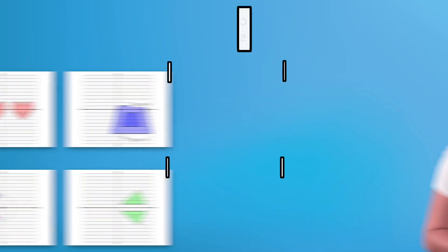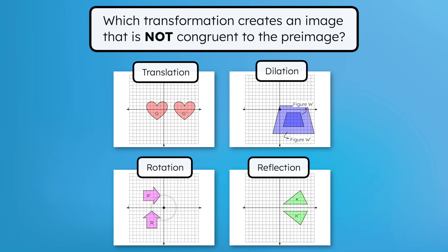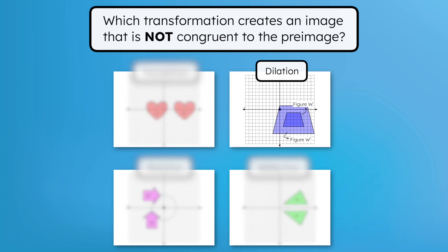Wow, learning the four transformations was pretty fun. I must admit though, one of them feels a bit different than the other three transformations. Let's look at them side by side. Which transformation creates an image that is not congruent to the pre-image? An image created by dilation is not congruent to the pre-image. It's the same shape, but not the same size.